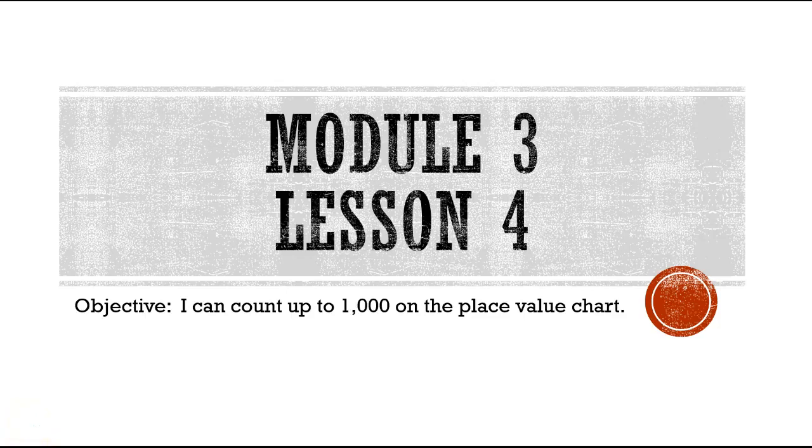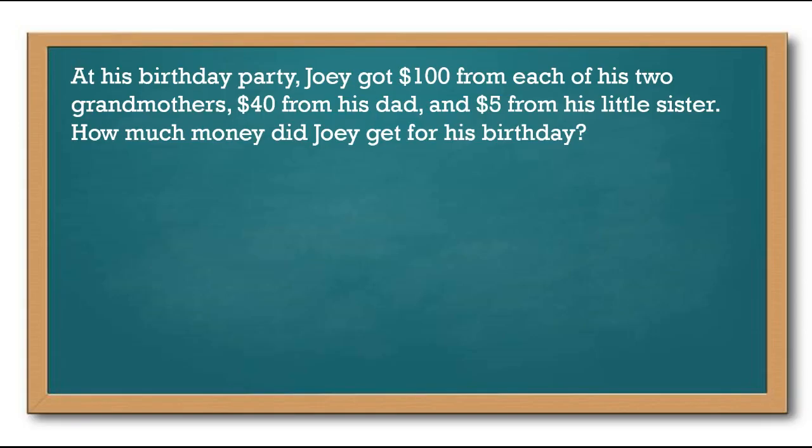Hello second grade, this is module three lesson four and our objective today is I can count up to 1,000 on the place value chart. At his birthday party Joey got $100 from each of his two grandmothers, $40 from his dad, and $5 from his little sister. How much money did Joey get for his birthday? You need to solve this, and because it's our application problem you may use whatever strategy we have used in the past that you feel most comfortable with. Go ahead and push pause and then push play when you're done.